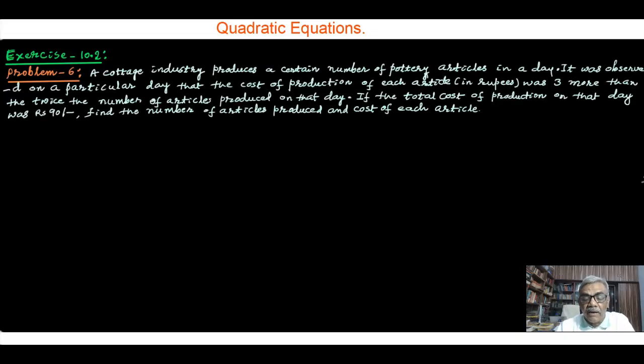The problem says that a cottage industry produces a certain number of pottery articles in a day. It was observed that on a particular day the cost of production of each article in rupees was three more than twice the number of articles produced on that day. If the total cost of production on that day was 90 rupees, find the number of articles produced and cost of each article.